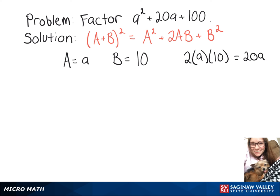And since that's the middle term that we had to start with, we know that we can rewrite a squared plus 20a plus 100 as a plus 10 quantity squared.